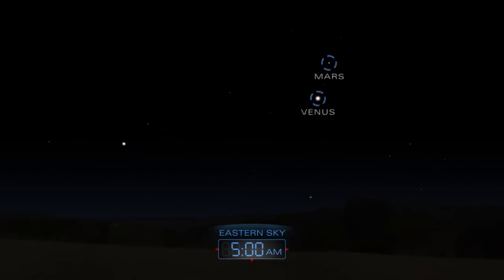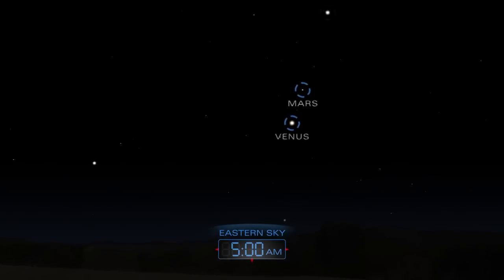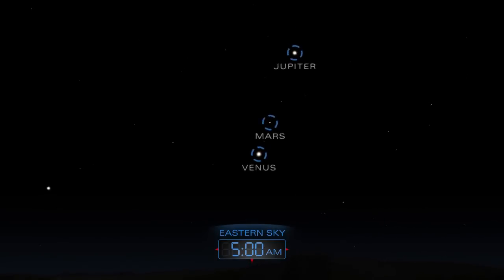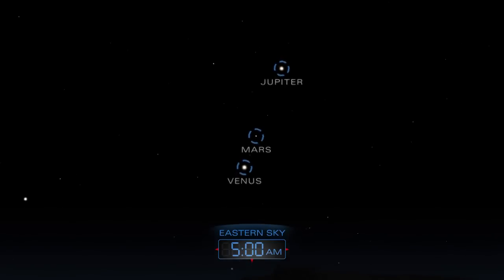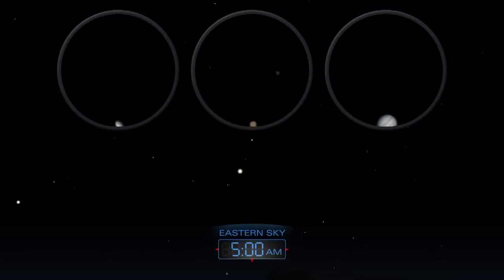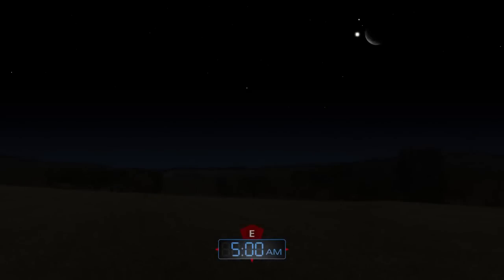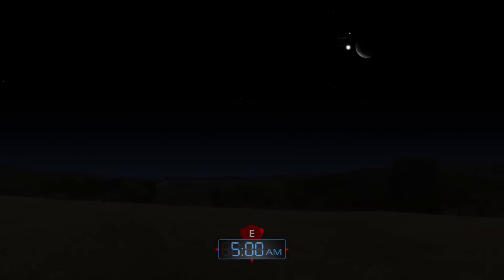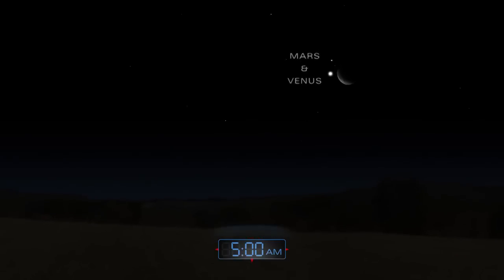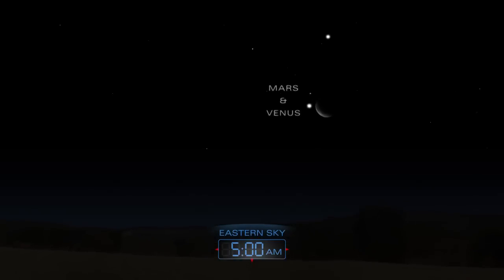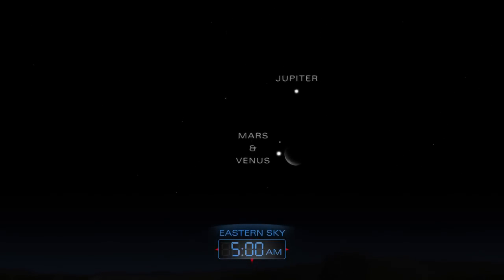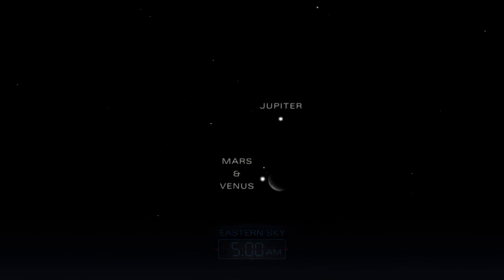Venus, Mars, and Jupiter gather together in the eastern sky before dawn. Mars and Venus form a tight pair in the early days of November, with the Moon joining them on the 7th.